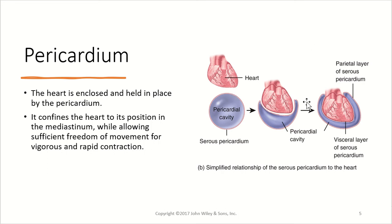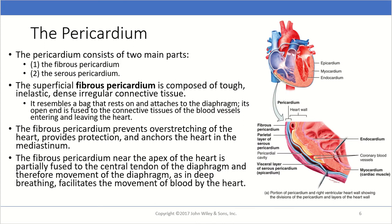Like most serous membranes, it is a double-layered membrane with a parietal and a visceral layer. The visceral layer is the inner layer, and the parietal layer is the outer layer of the serous membrane. The potential space between these two layers is going to be the pericardial cavity.